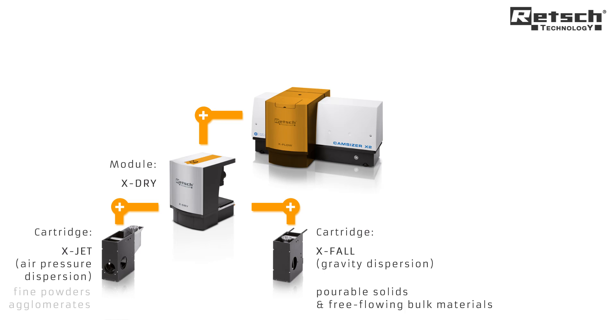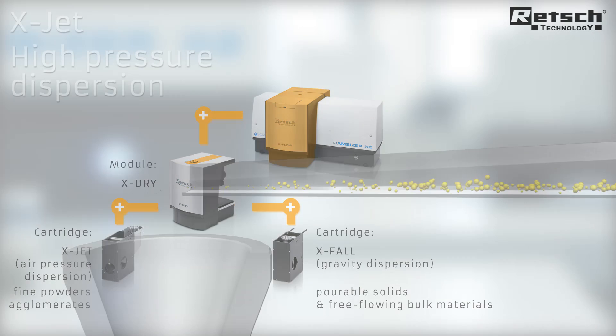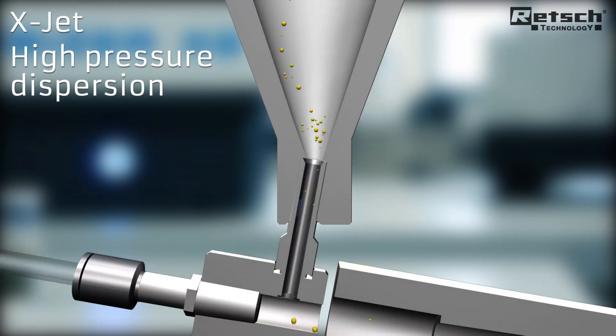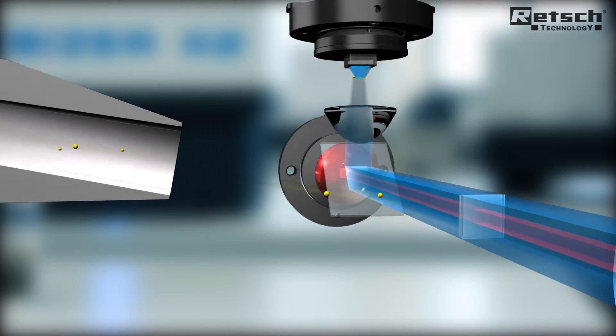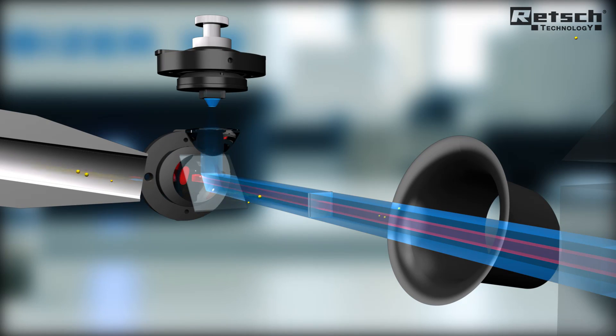The high-pressure cartridge X-Jet is suitable for fine powders and agglomerated material. The sample is dispersed in an airflow which ensures that agglomerates which would falsify the measurement results are broken down prior to detection.